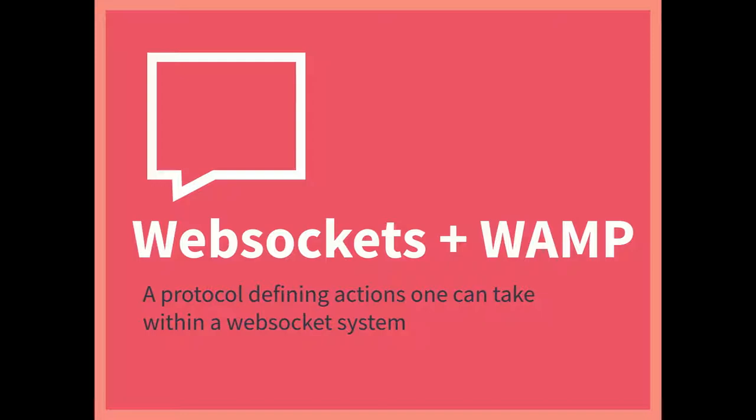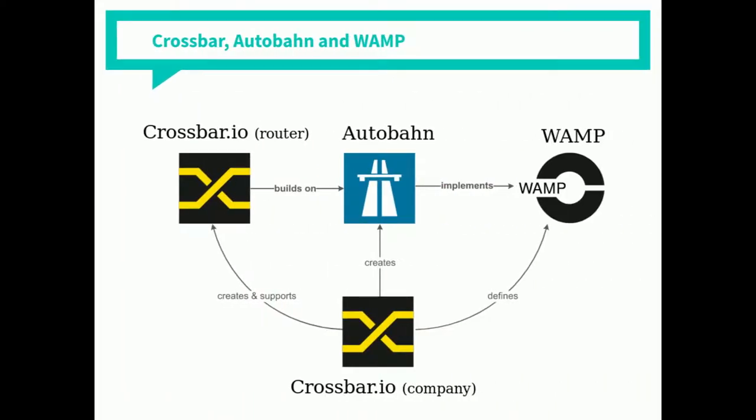WAMP was invented by a company called Crossbar initially, but it's generally an open standard that lots of people contribute to. Crossbar themselves are an interesting company — they found their systems so complicated they made their own diagram to explain who they are. They have Crossbar.io the router, and Crossbar.io the company. Then they have Autobahn, which is a Python library that powers the router, and also a JavaScript library. They all implement WAMP and also specify WAMP. It's a bit weird, but nice that they thought ahead and made a diagram.